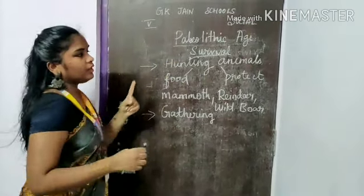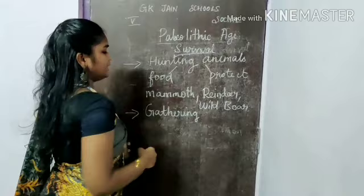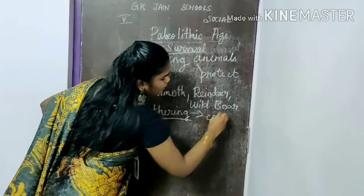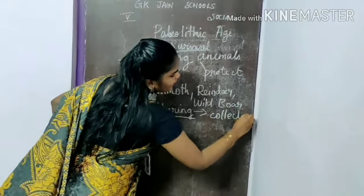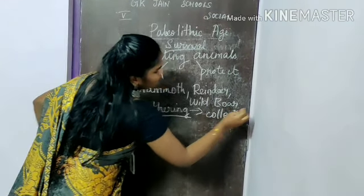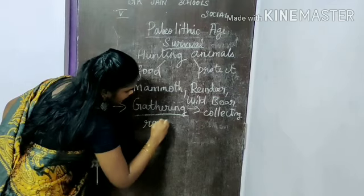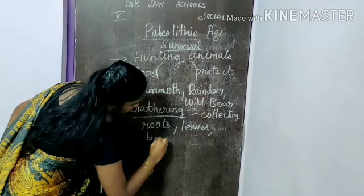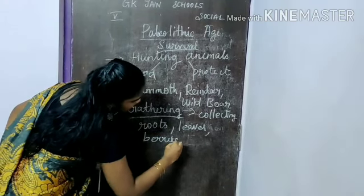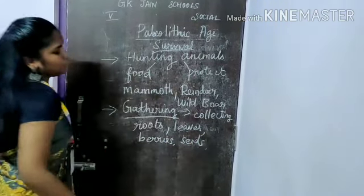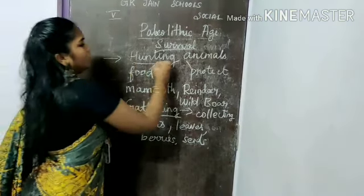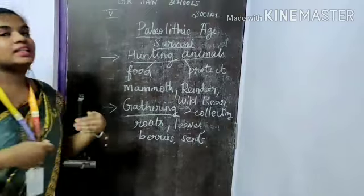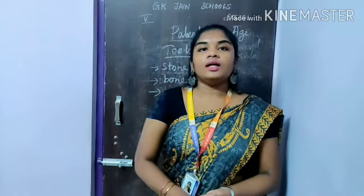The second reason for survival is gathering, which means collecting. They started collecting roots, leaves, berries, and seeds for their food. By hunting animals and gathering roots, leaves, berries, and seeds, they survived on the earth.